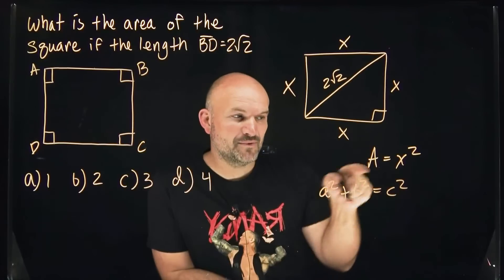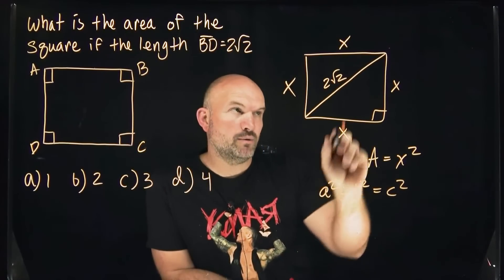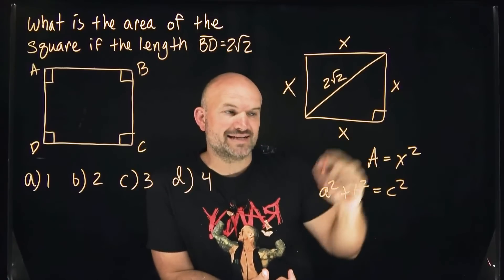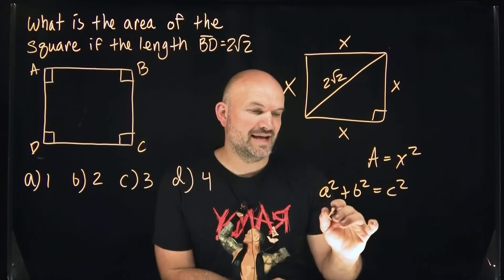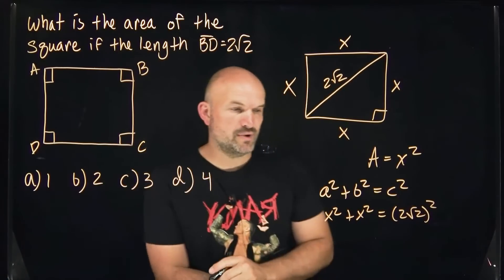Now, in this case, we know c squared, that's our hypotenuse, that's going to be 2 square root of 2, and we know our two legs are actually both x. So now I can rewrite this, x squared plus x squared is equal to 2 square root of 2 quantity squared.